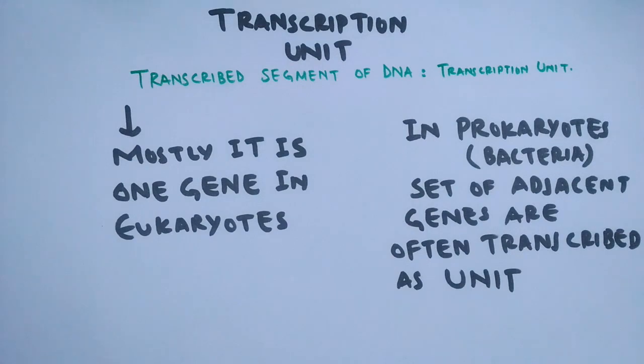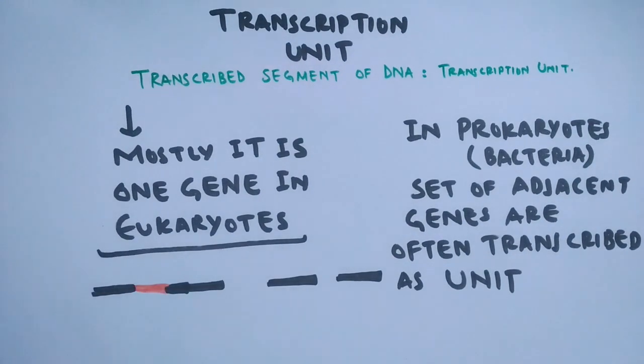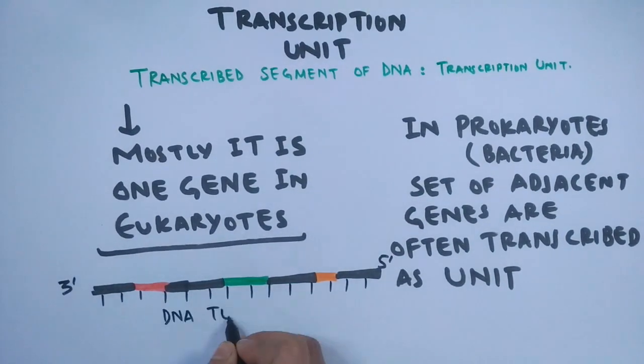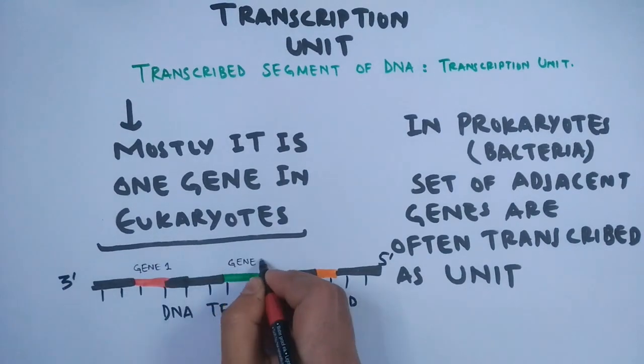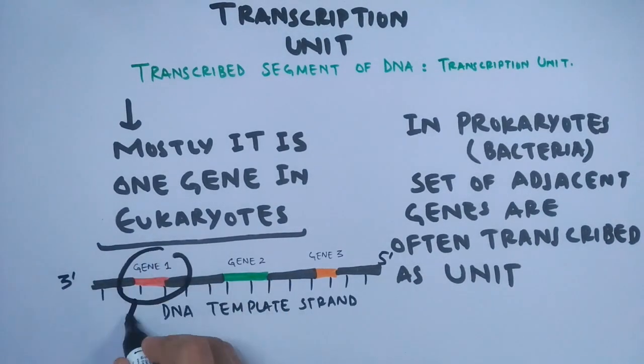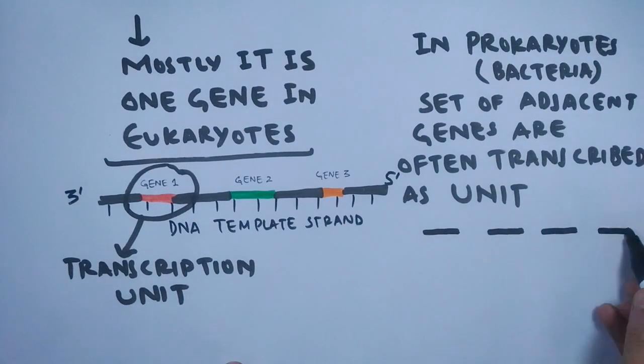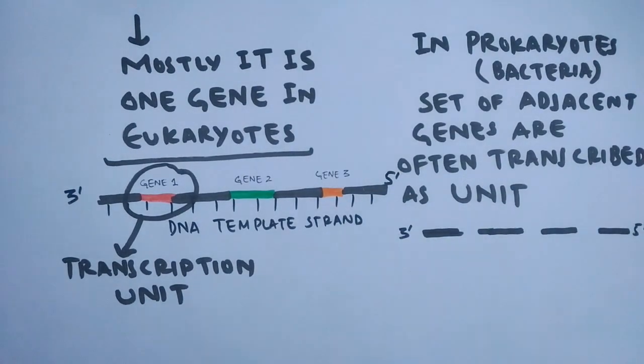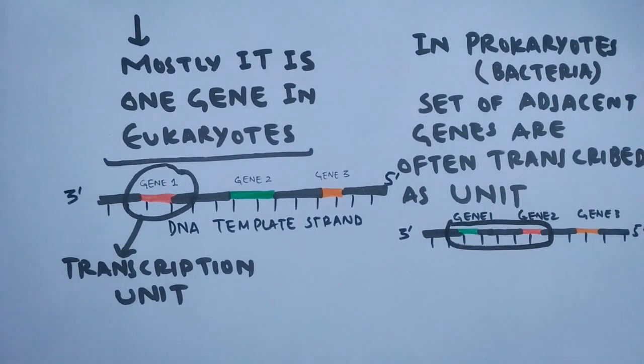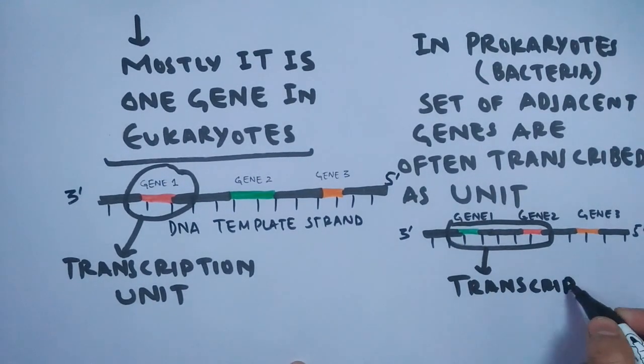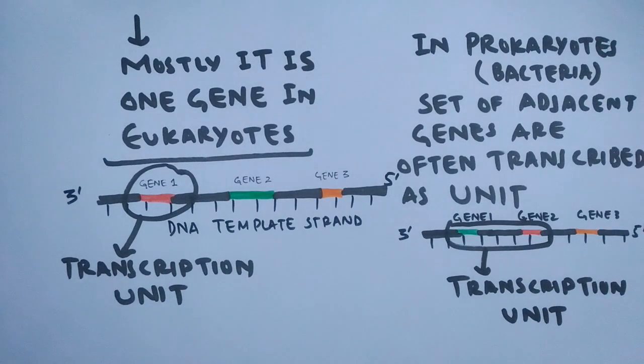Diagrammatically, in eukaryotes we have a DNA template strand with three genes: gene 1, gene 2, and gene 3. Gene 1 constitutes the transcription unit. In prokaryotes with a DNA template strand with three genes, gene 1 and gene 2 can be called the transcription unit because multiple genes are transcribed simultaneously.